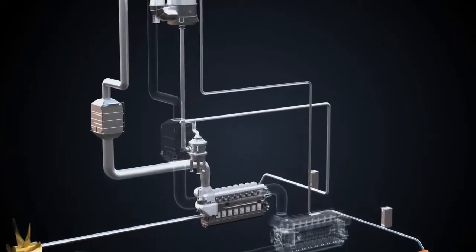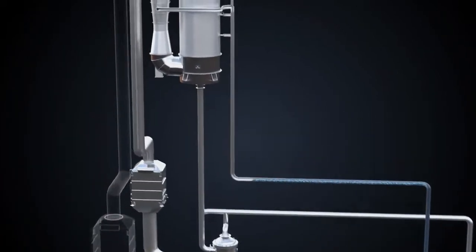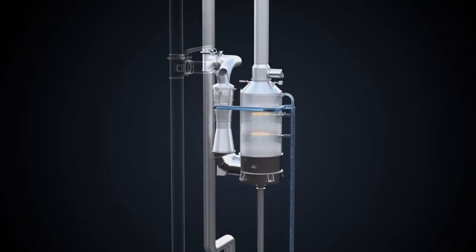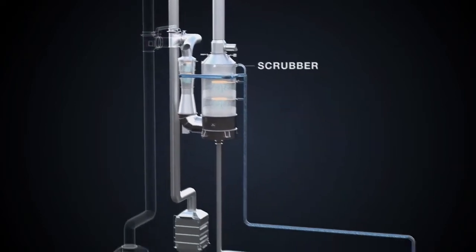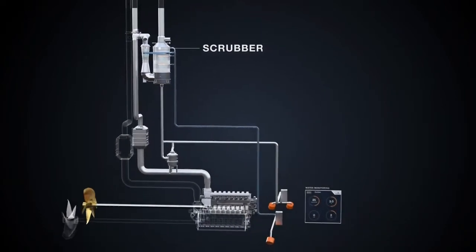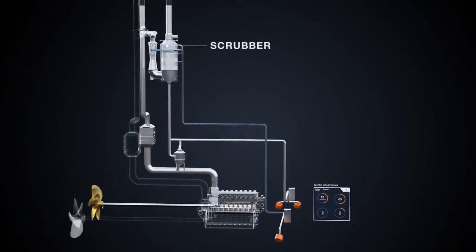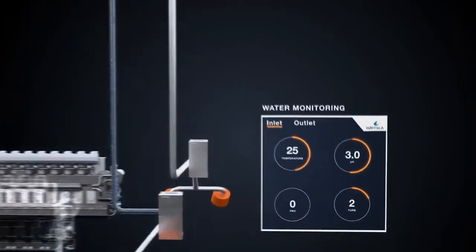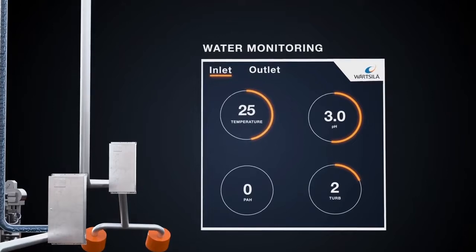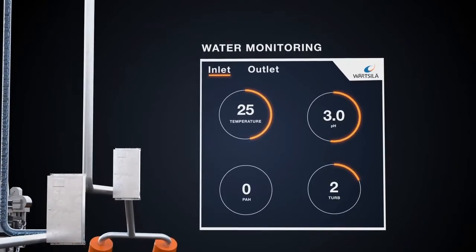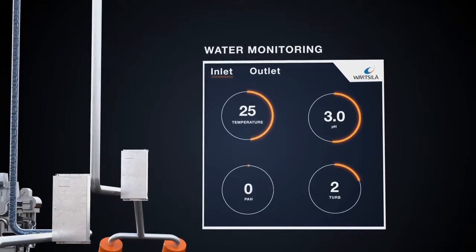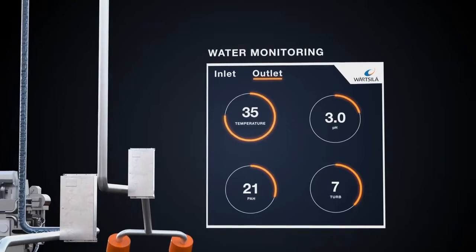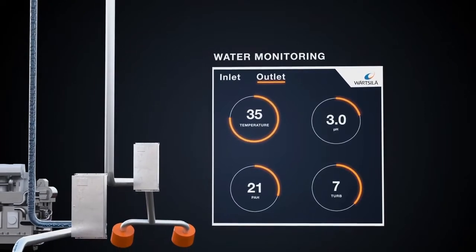Seawater is supplied to the system through scrubbing water pumps and then is routed to the scrubber unit. Both the inlet and the discharge of the wash water are monitored by the water monitoring unit. Our Wartsila pH Calculator will set the pH limit of the vessel required by the International Maritime Organization through a desktop exercise, eliminating the need for case-specific calculations or physical measurements 4 meters from the point of discharge.